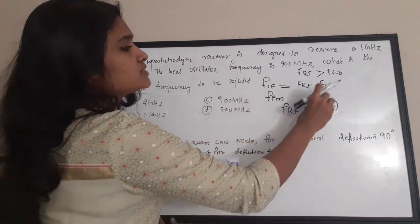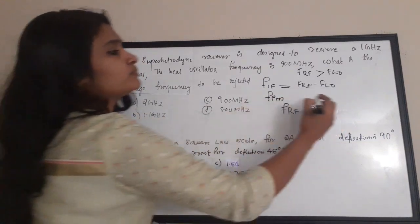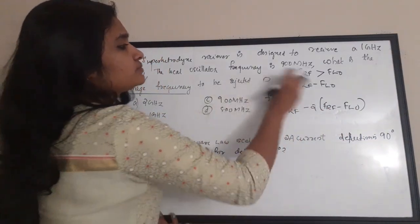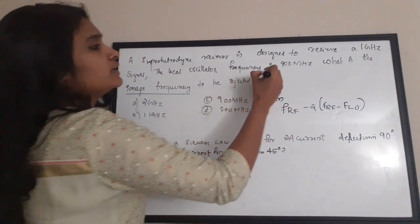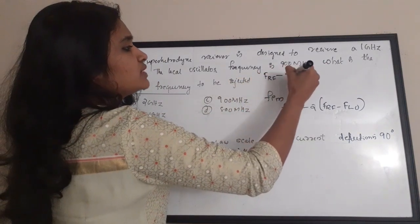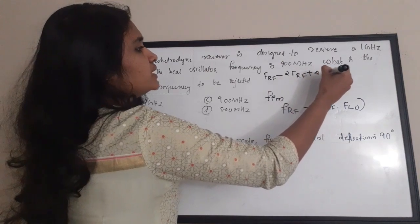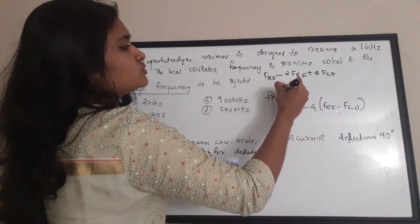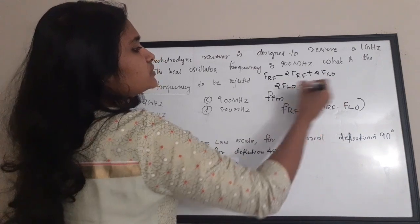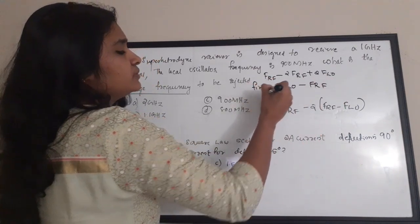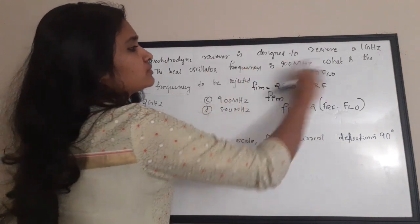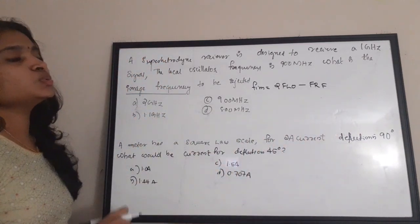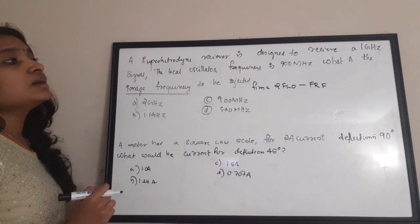Since FIF = FRF − FLO, substituting gives FIM = FRF − 2(FRF − FLO) = 2×FLO − FRF. So the image frequency equation becomes 2×FLO − FRF.